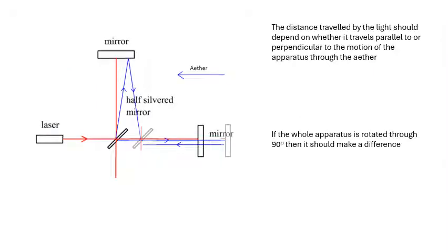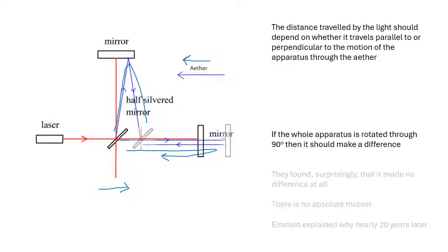Because the paths will travel different lengths as the apparatus moves through the ether. Yeah, the apparatus is moving that way, the ether is moving that way relative to the apparatus. The ray of light that does that stuff will end up traveling a different distance. This ray of light will actually travel a shorter distance, won't it? So if you rotate the whole thing through 90 degrees, there should be a difference - yeah, a measurable difference.